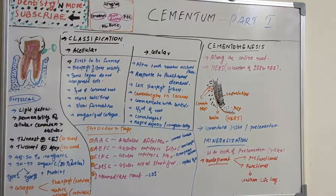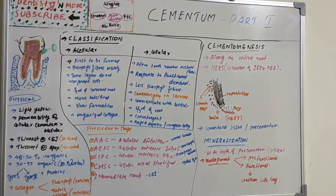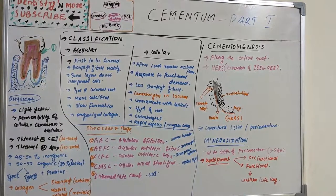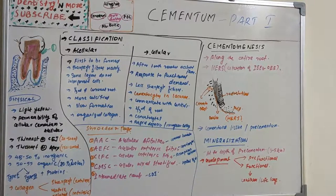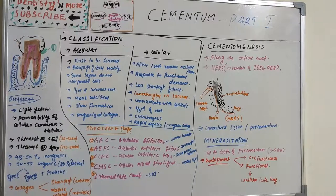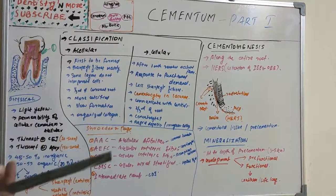Non-collagenous proteins play a very important role in matrix deposition, initiation and control of mineralization, and matrix remodeling. Key non-collagenous proteins include bone sialoprotein, osteopontin, tenascin, fibronectin, and osteocalcin — several of which we have seen in the periodontal ligament. Proteoglycans such as chondroitin sulfate, hyaluronic acid, and heparin sulfate are also present.